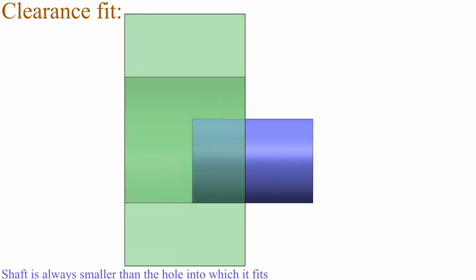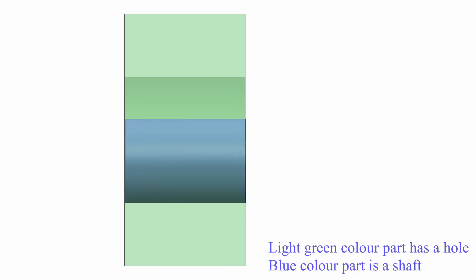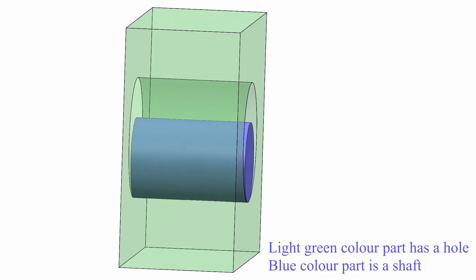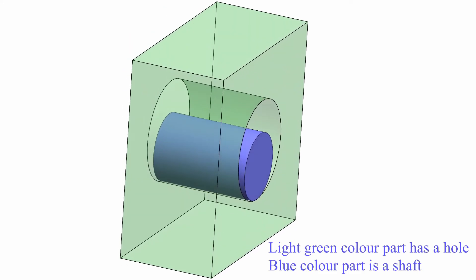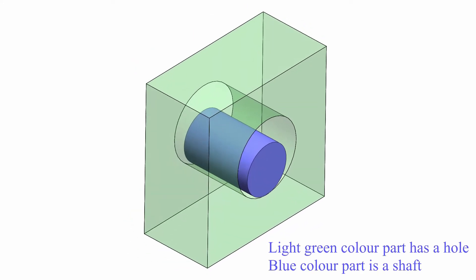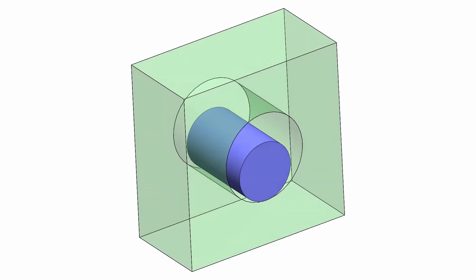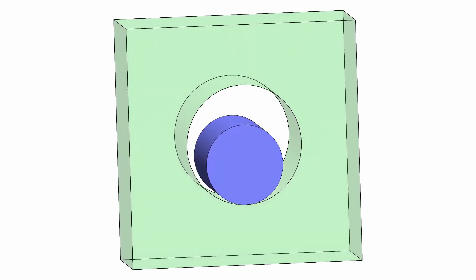In a clearance fit, the shaft is always smaller than the hole into which it fits. It can be assembled or disassembled by hand, creating free running and sliding assemblies where precision is not required. Sub-classifications include: loose fit, used on loose pulleys and agricultural machinery; running fit, used in bearings; and slide fit or medium fit, used in tool slides and slide walls.